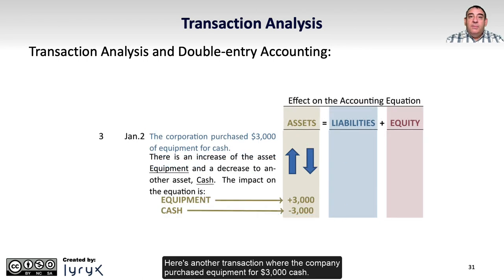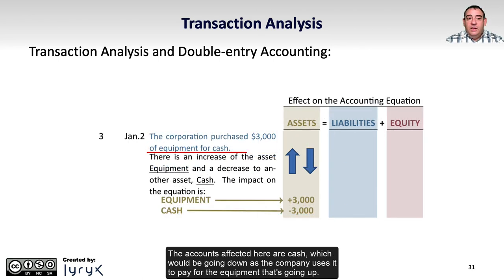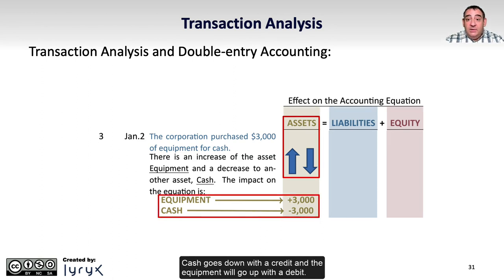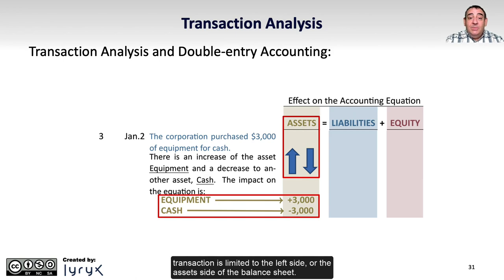In another transaction, the company purchased equipment for $3,000 cash. The accounts affected are cash, which is going down as the company uses it to pay, and equipment, which is going up. Both accounts are assets — one goes up and one goes down. Cash goes down with a credit, and equipment goes up with a debit. Since one asset is increased and the other decreased by the same amount, the entire transaction is limited to the left side or the asset side of the balance sheet.